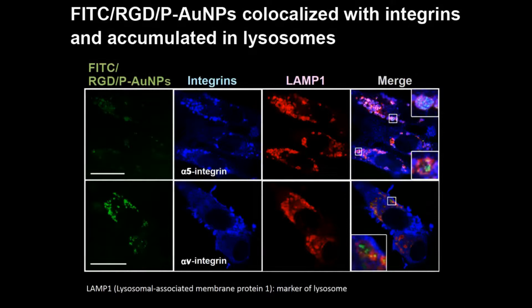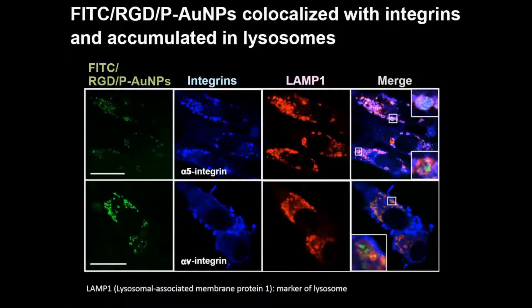For the intracellular pathway, we conjugated RGD gold nanoparticles with a fluorescent dye. In this picture, we can see that the RGD-conjugated gold nanoparticles showed co-localization with integrin alpha-5 and alpha-3, and finally accumulated in lysosomes.